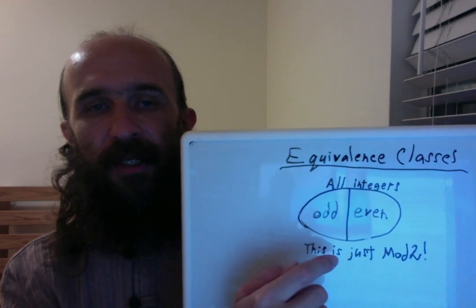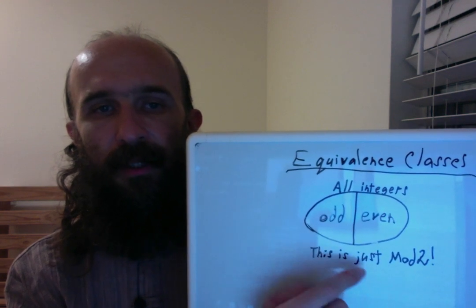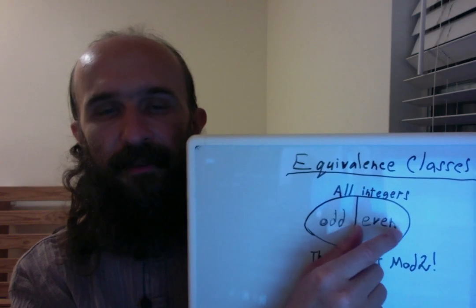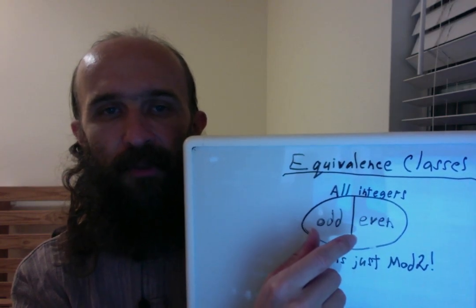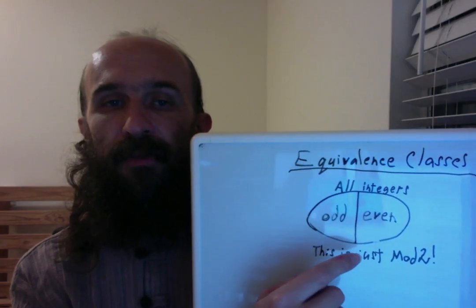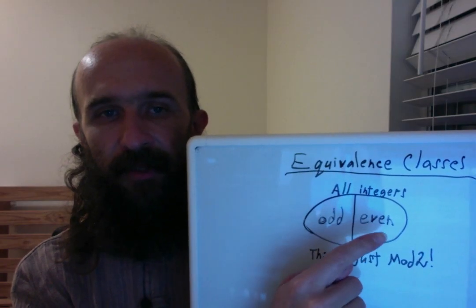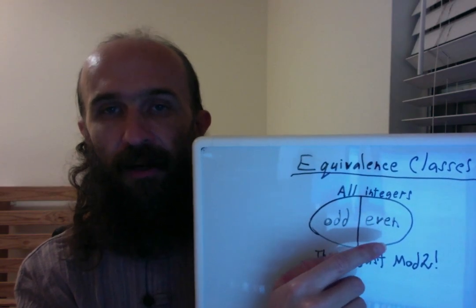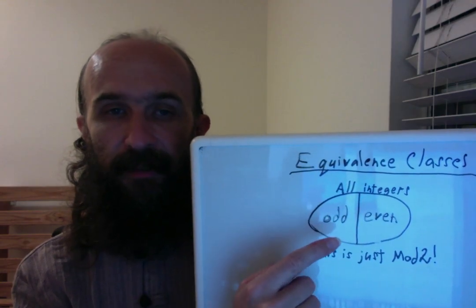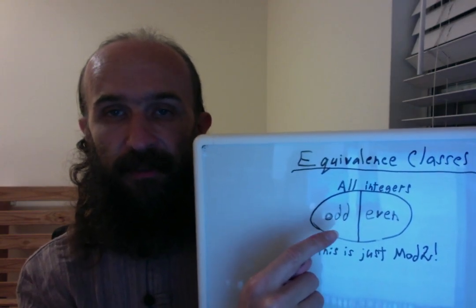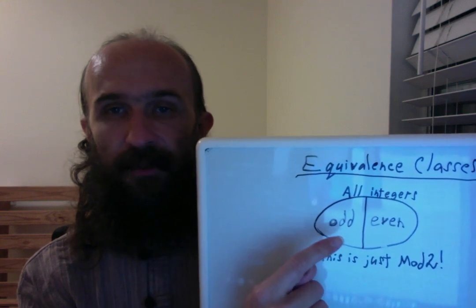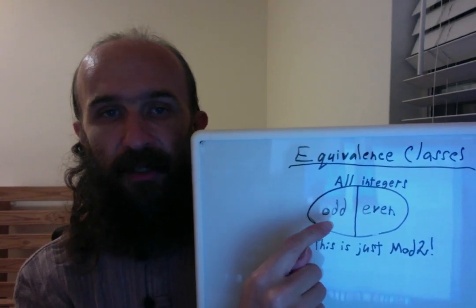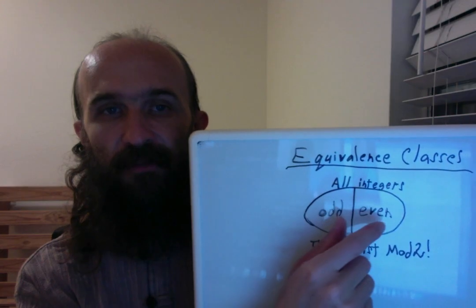Now it turns out that this is just mod 2, because all even numbers are equal or equivalent mod 2, and all odd numbers are equal mod 2. So for example, if I take an even number 8 and divide it by 2, there's no remainder — same for any even number. So all even numbers are equal mod 2. And if I take an odd number like 7 divided by 2, there's a remainder of 1. There's always a remainder of 1 when dividing an odd number by 2. So all odd numbers are equal mod 2. That's why they are called equivalence classes.